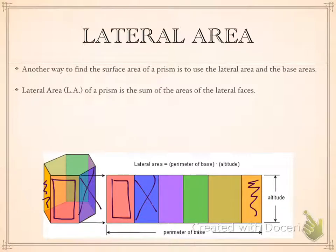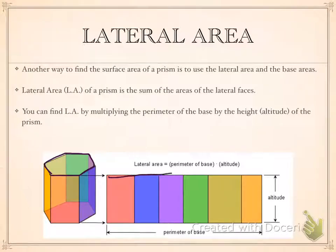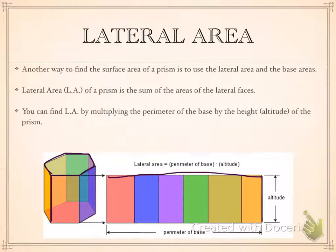When you lay those faces out, you can see that they make just a big rectangle. So you can find lateral area by multiplying the perimeter of the base — and that perimeter is actually equal to this length right here — by the height or the altitude, which is how tall the prism is.